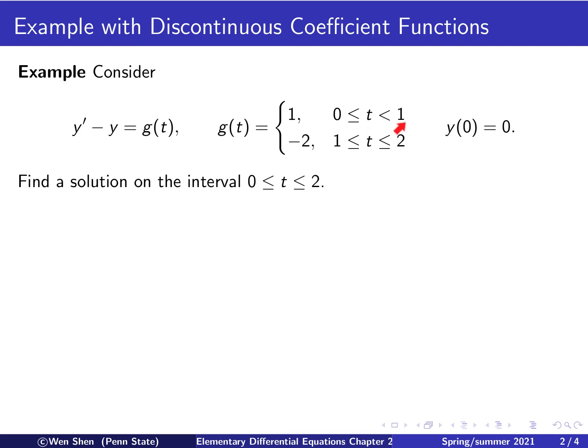That is, for t between 0 and 1, it's 1, and then when t is between 1 and 2, it's negative 2. And we have the initial condition, y(0) equals 0.